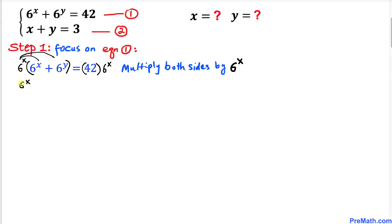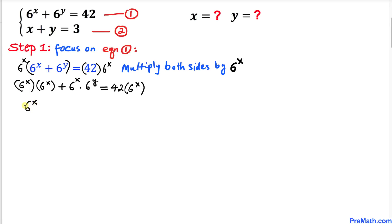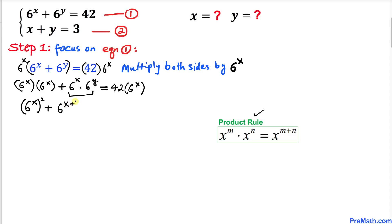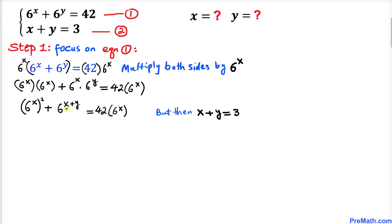We get 6 power x times 6 power x, plus 6 power x times 6 power y, equals 42 times 6 power x. This can be written as (6 power x) whole power 2, and using the product rule, 6 power x times 6 power y becomes 6 power (x plus y), equals 42 times 6 power x.